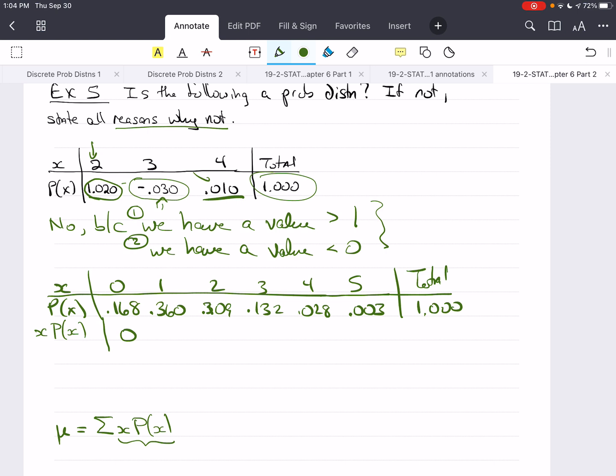So, I take 0 times 0.168, and I get 0. I take 1 times 0.360, I get 0.360. 2 times 0.309 is 0.618. 3 times 0.132, I get 0.396. 4 times 0.028 is going to give me 0.112. And then, 5 times 0.003 is 0.015. Now, I need to add these together. So, I start with 0, and then plus 0.360, plus 0.618, plus 0.396, plus 0.112, plus 0.015. And I get 1.501.